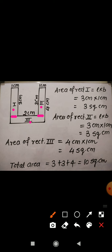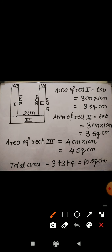Now let us find out the area of each rectangle. For the first rectangle, the length is 3 cm and breadth is 1 cm. So area of rectangle is length into breadth, that is 3 cm into 1 cm, so area will be 3 square cm. Similarly, for the second rectangle, the length is again 3 cm and breadth is 1 cm, so area will again be 3 square cm.